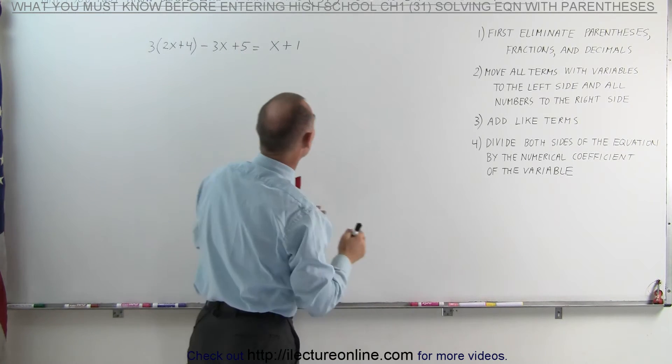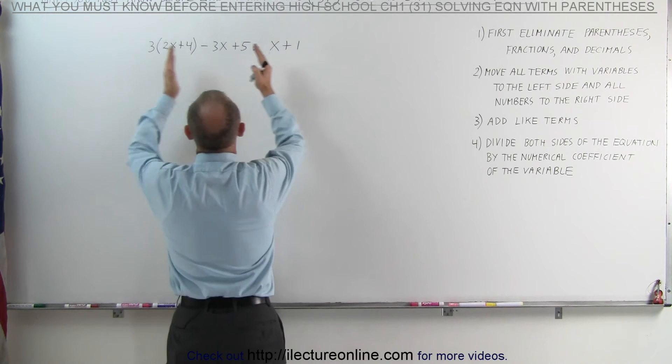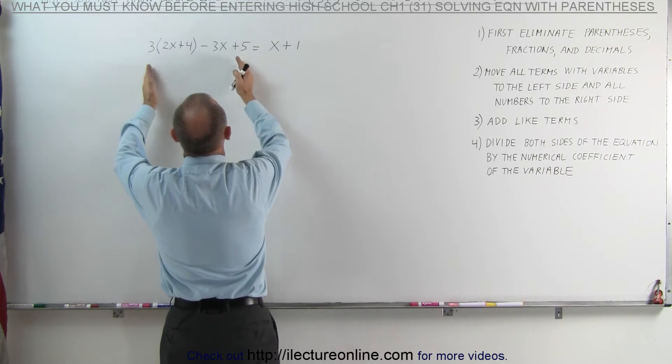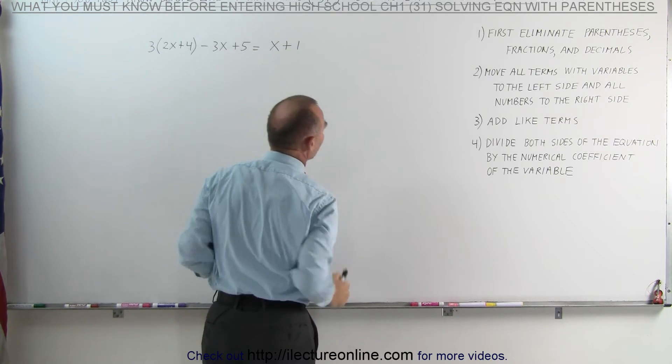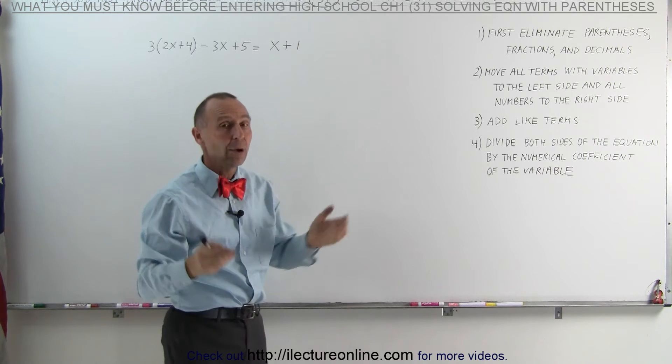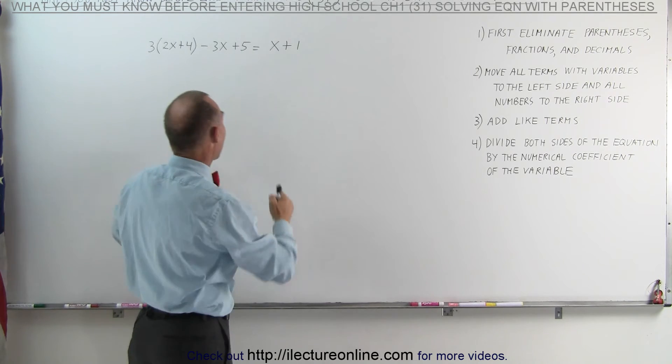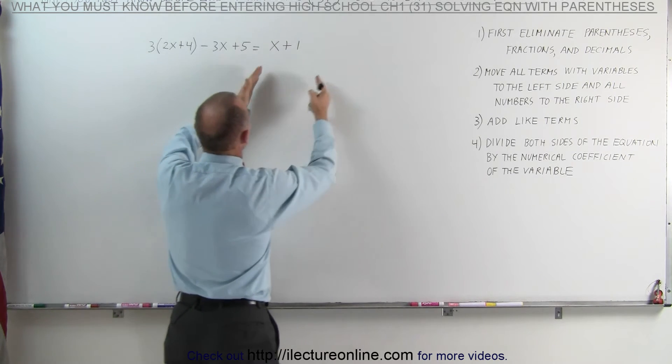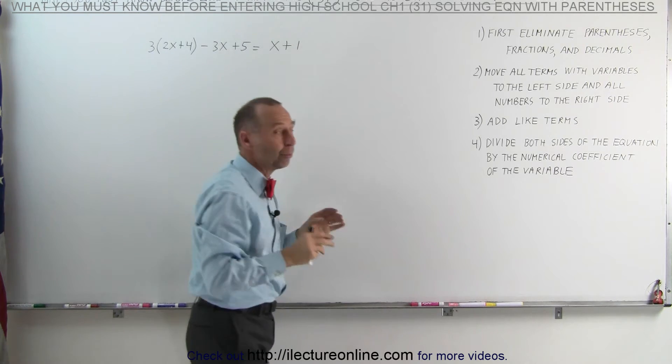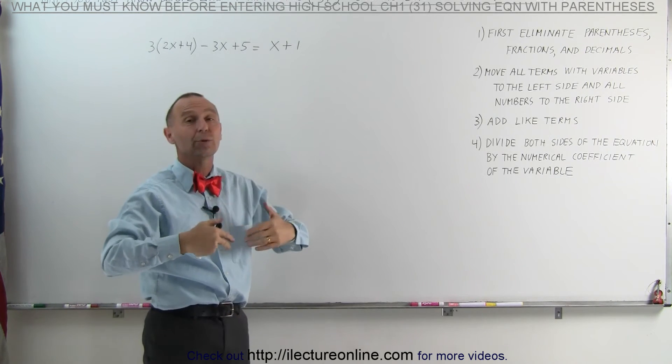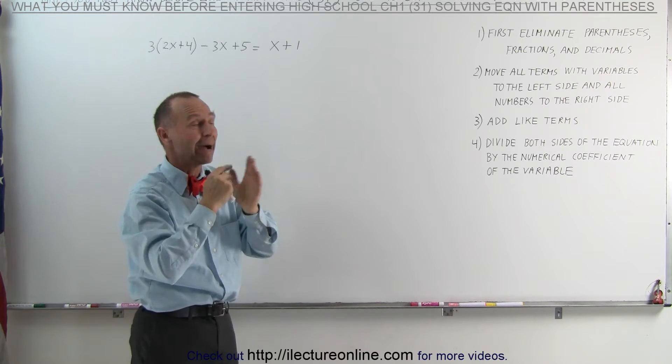Secondly, we're going to move all the terms that have the variable in it to the left side of the equation and all the numbers without the variable to the right side of the equation. The third step, we're going to add like terms. Add all the terms on the left side, add all the terms on the right side. Presumably, when we separate it, all the terms will be like terms and so we can combine those terms.